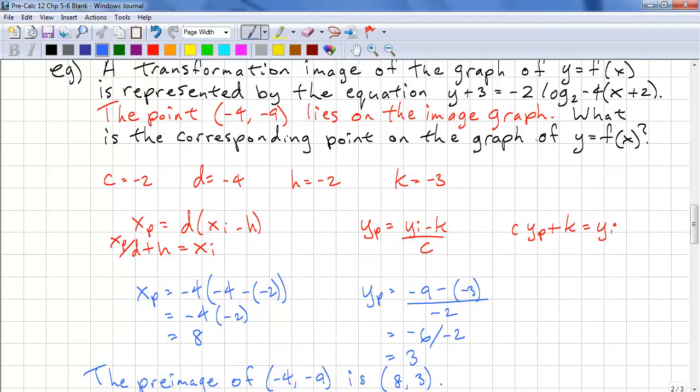So we write the pre-image of (negative 4, negative 9) is (8, 3). So be careful. Make sure you know where your point is coming from, whether it's from the image or the pre-image, so that you use the correct formula.